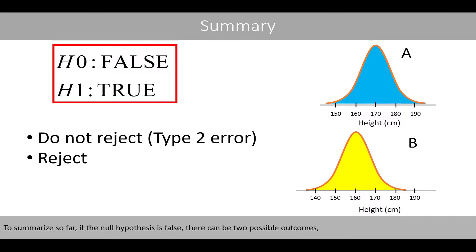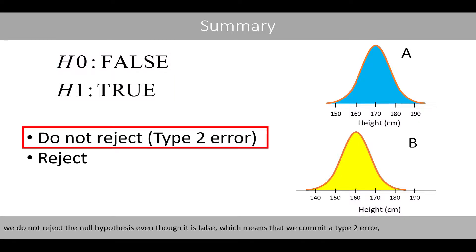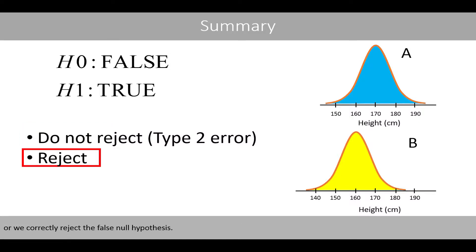To summarize: if the null hypothesis is false, there can be two possible outcomes. We do not reject the null hypothesis even though it is false, which means that we have committed a type 2 error, or we correctly reject the false null hypothesis.